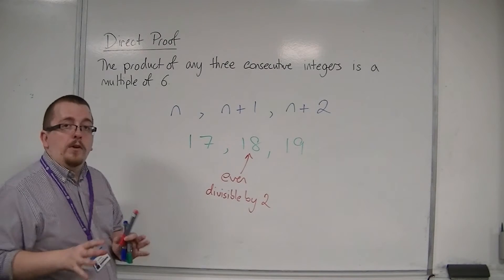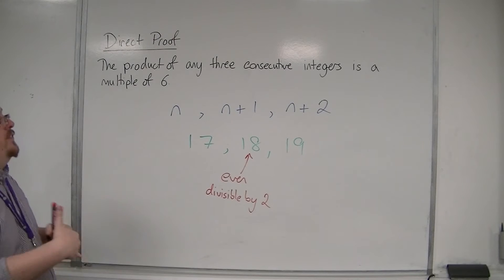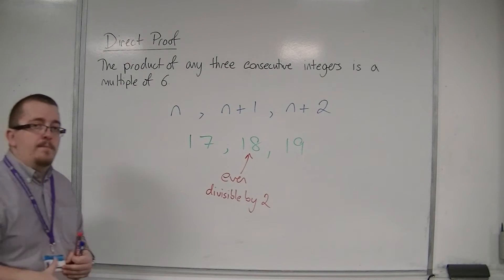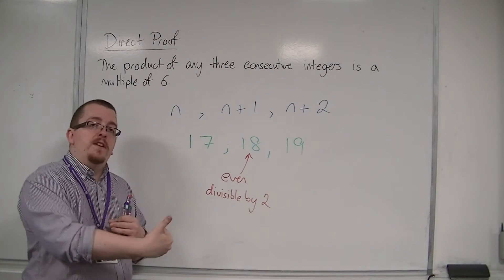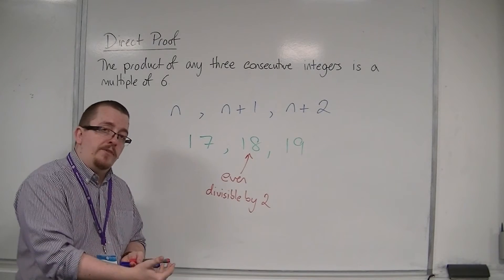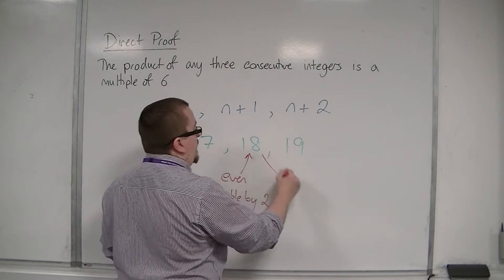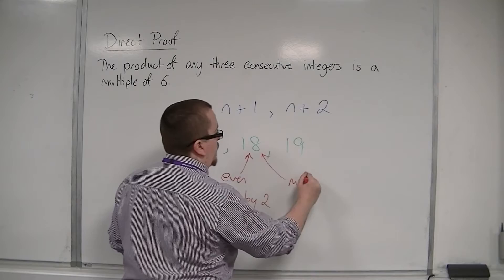Now, also, because you're picking three consecutive integers, that means that at least one of the numbers in your list will be a multiple of three. It must be the three times table. And, in this case, 18 is also a multiple of three.